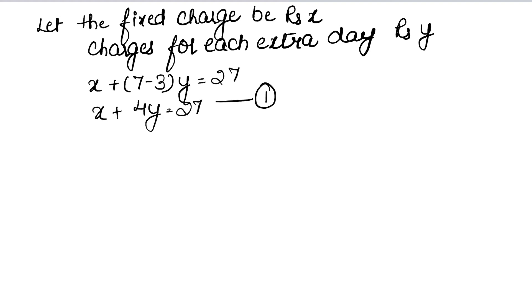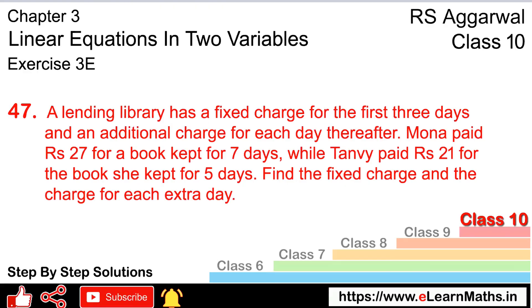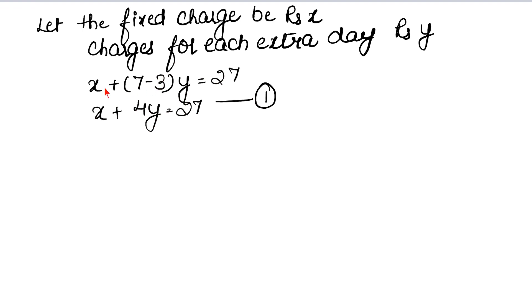So this becomes our first equation: x plus 4y equals 27. Here the 7 represents 7 days she kept it, and we subtracted 3 from it. As I said, you have to note that for the first three days.